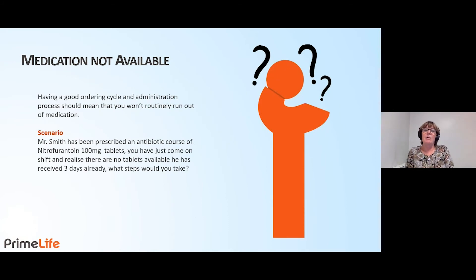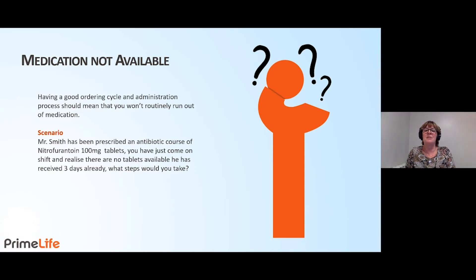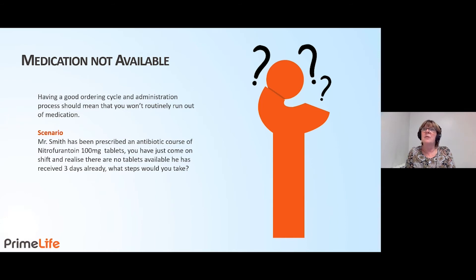We're going to have a chat now about medications not available — one of my favourite subjects. Having a good ordering system and administration process should mean that you won't routinely run out of medication. On our EMAR system, the system actually alerts us when we're running out of stock seven days before we run out. It's important that we recognise these alerts and act on them.